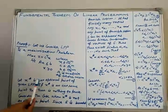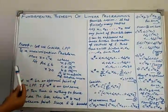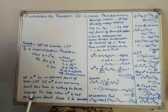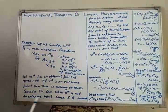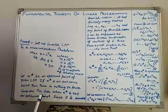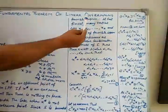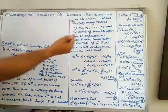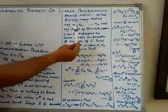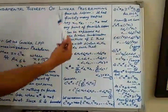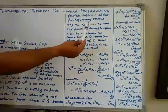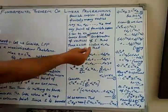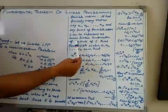Let X* be an optimal point of the given linear programming problem. If X* is an extreme point, there is nothing to prove. Consider the case when X* is not an extreme point, i.e., not a vertex. Since S is a bounded feasible region, it has finitely many vertices. Let us say it has finite vertices X1, X2, ..., Xk. Any point of the feasible region S can be expressed as a convex linear combination of the vertices of S.